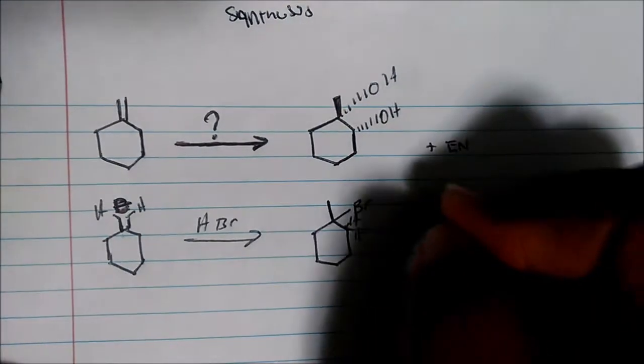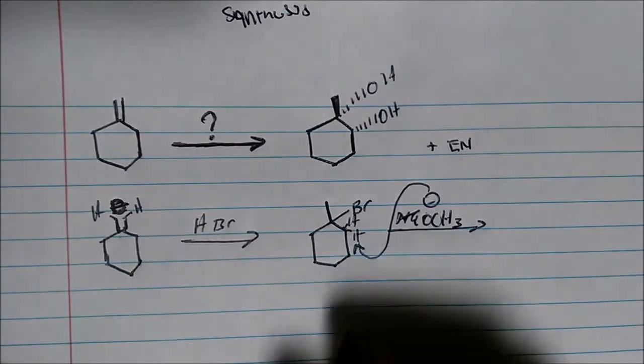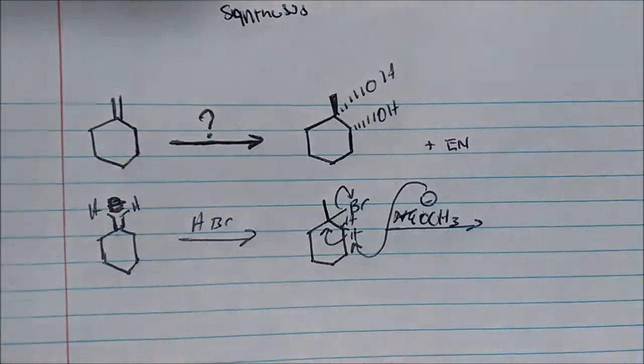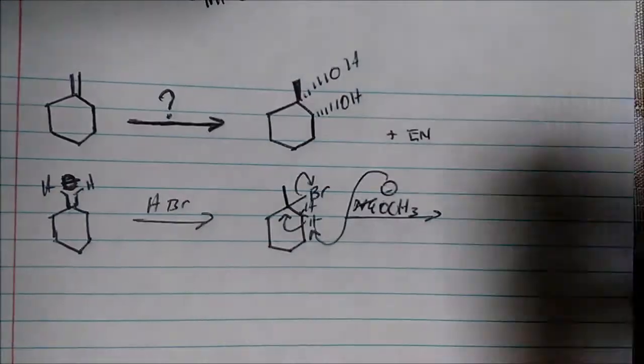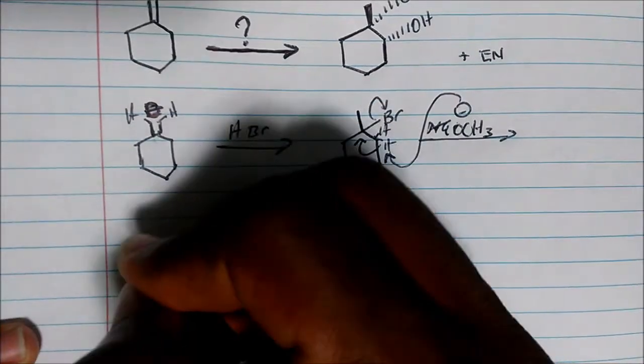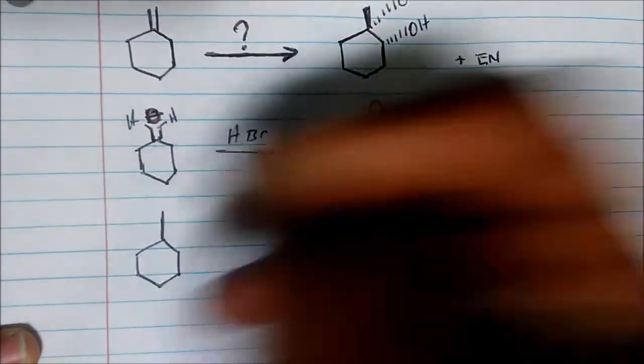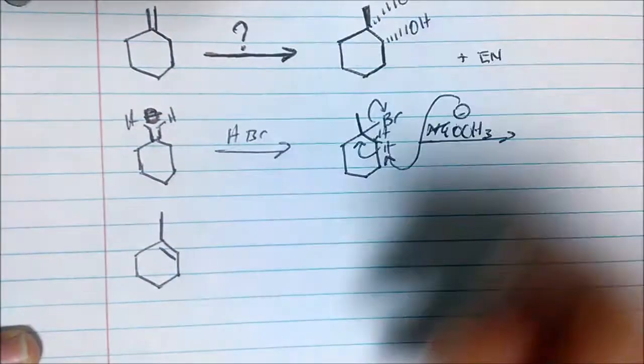You could imagine these hydrogens being here. This comes in, plucks off the hydrogen, kicks in and then kicks off the bromine. We get a product that looks like this with a CH3 and a double bond here.